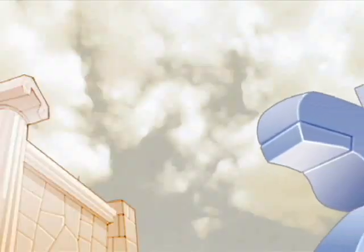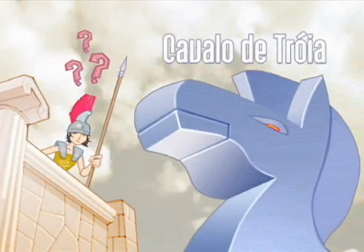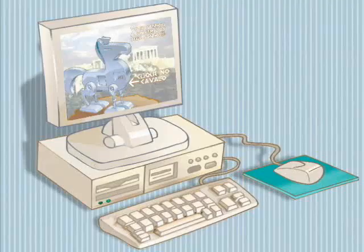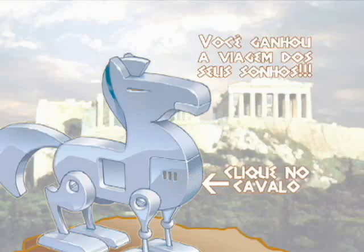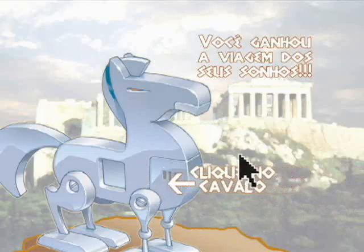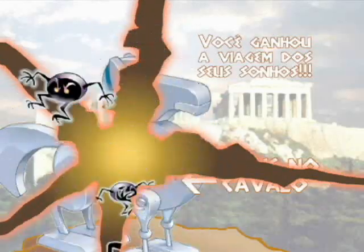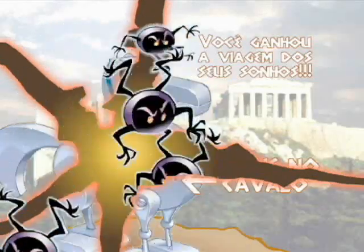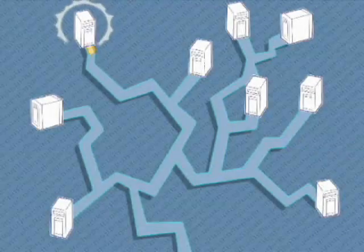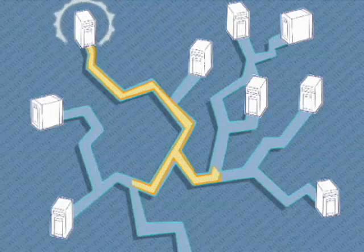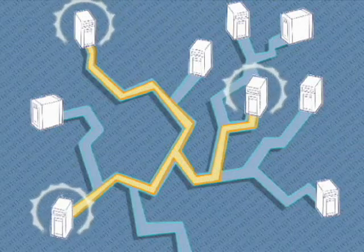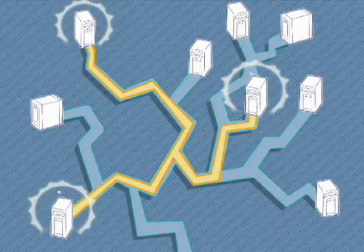O Trojan, ou Cavalo de Troia, é um programa normalmente recebido como um presente. Por exemplo, na forma de cartão virtual, álbuns de fotos, protetor de tela ou jogo. Além de executar tarefas para as quais foi aparentemente projetado, também executa outras funções maliciosas e sem o conhecimento do usuário, como instalar um vírus ou abrir portas que podem ser acessadas à distância por um invasor.